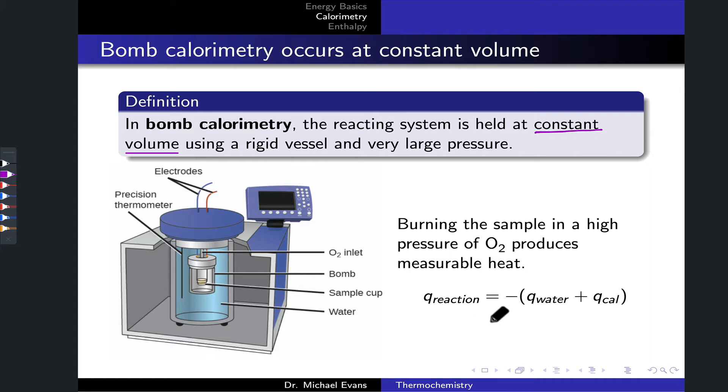There are two heat terms on the right-hand side of the heat balance to account for that. Of course, the signs are opposite because any heat released by the reacting components must be absorbed by either the water or the calorimeter walls.